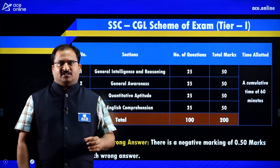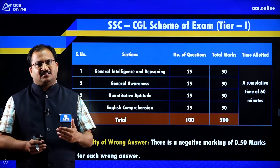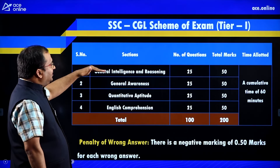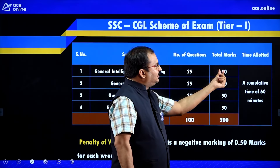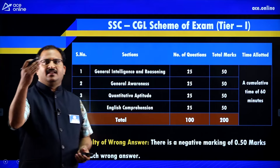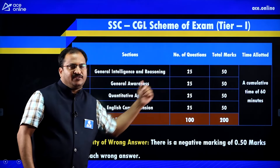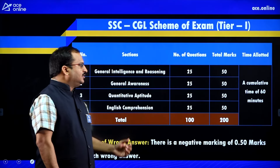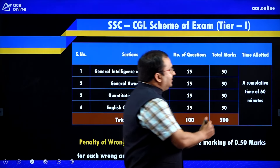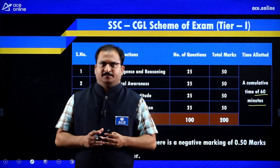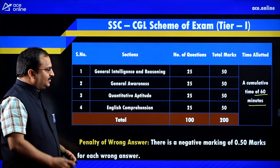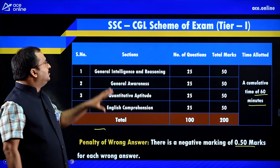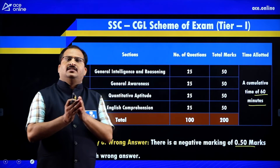Now let us see the scheme of examination. SSC CGL has two tiers — Tier 1 and Tier 2. In Tier 1 there are four sections: General Intelligence and Reasoning (25 questions, 50 marks), General Awareness (25 questions, 50 marks), Quantitative Aptitude (25 questions, 50 marks), and English Comprehension (25 questions, 50 marks). Total: 100 questions, 200 marks, 60 minutes. There is a negative marking of 0.5 marks for each wrong answer.